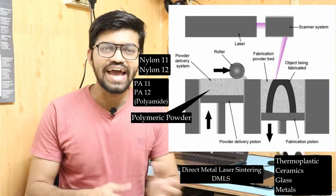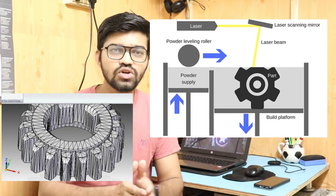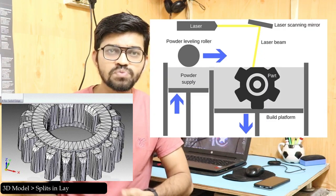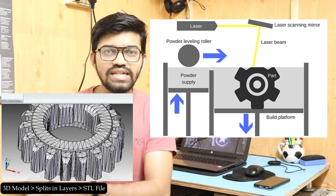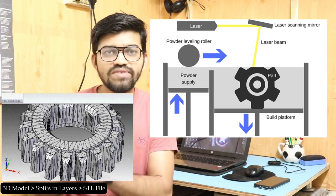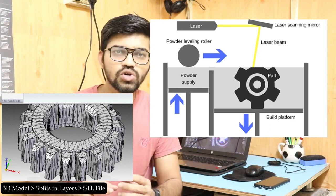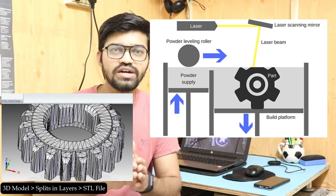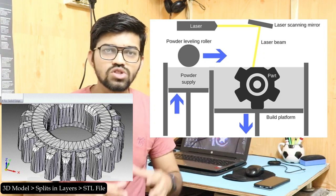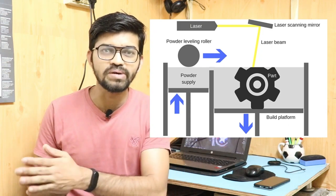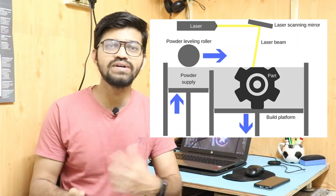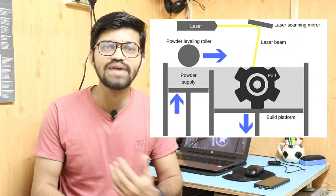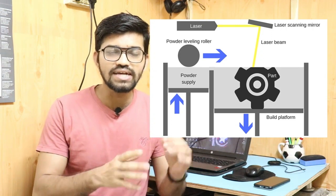Just like in stereolithography and FDM, SLS also requires a 3D model that is split into layers in STL format — Standard Tessellation Language — which is the input file to the printer. The printer calculates the layer-by-layer geometry of the object and is connected to the laser. The laser can be CO2 or nitrogen-based, depending on the required surface finish and type of fusion.